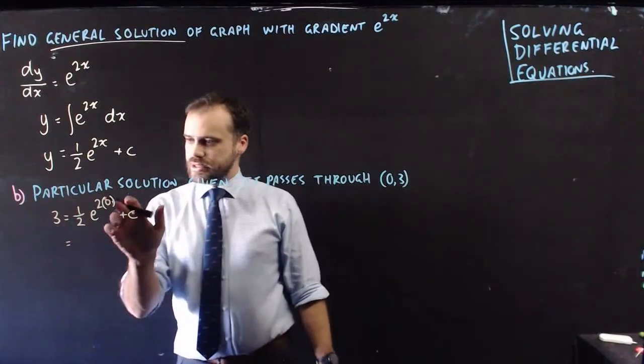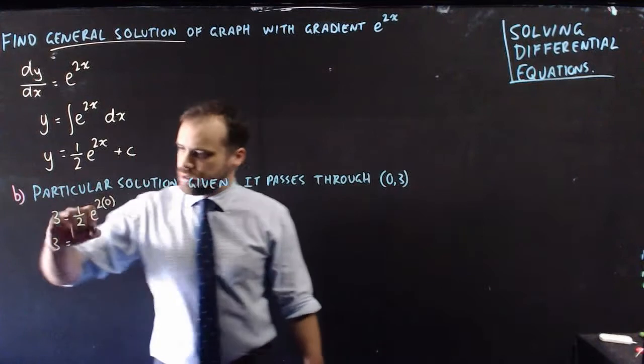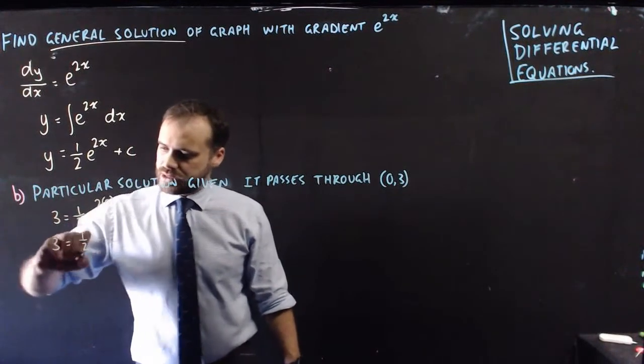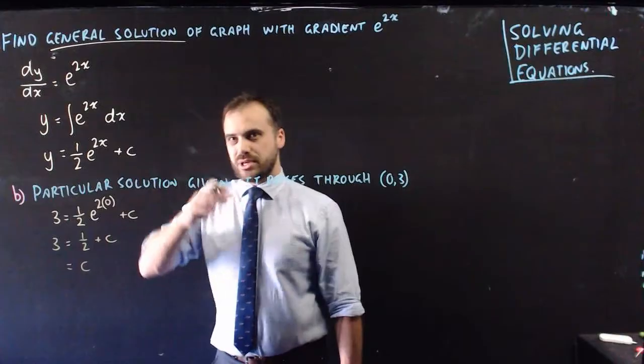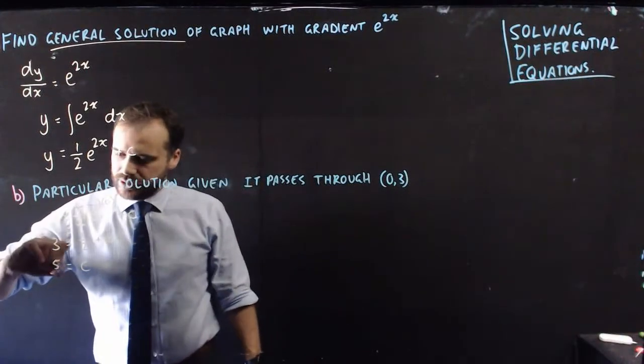So I've subbed in 3 for y and 0 for x. That's going to be 3 equals 1/2 times 1. 3 equals 1/2 plus c. So c equals 3 minus 1/2, which is 2 and a half or 5/2.